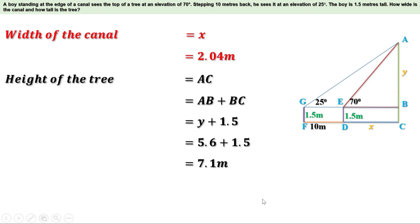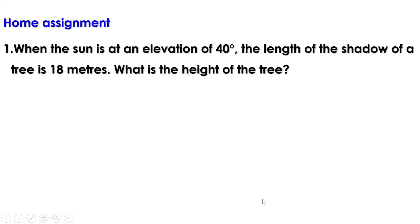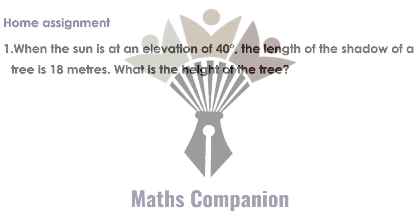Now there is a homework. When the sun is at an elevation of 40 degrees, the length of the shadow of a tree is 18 meters. What is the height of the tree? Let us discuss the remaining problems in the next video. Till then, bye.